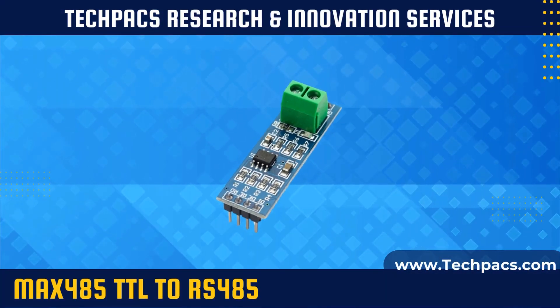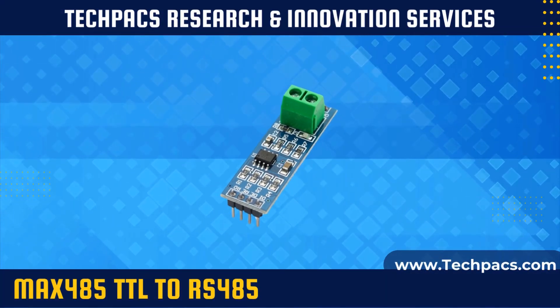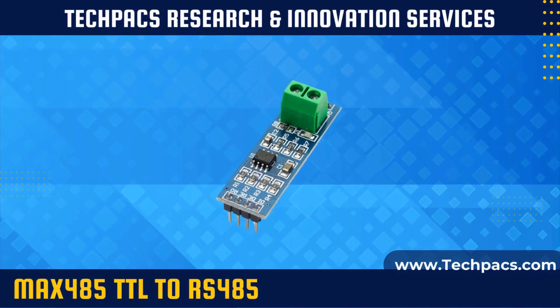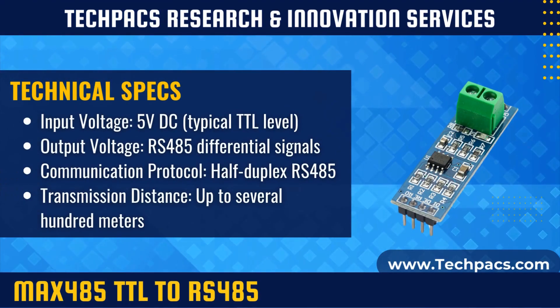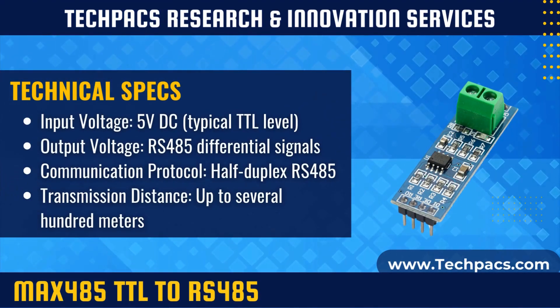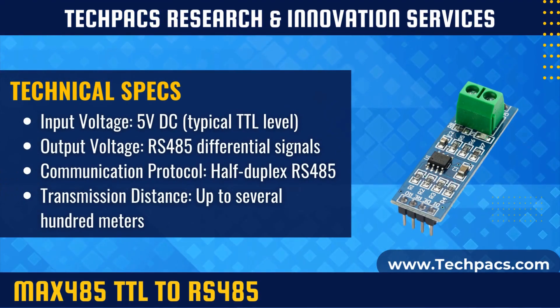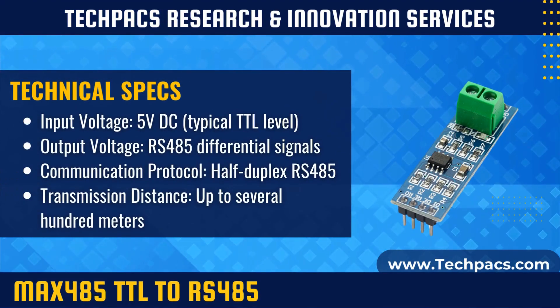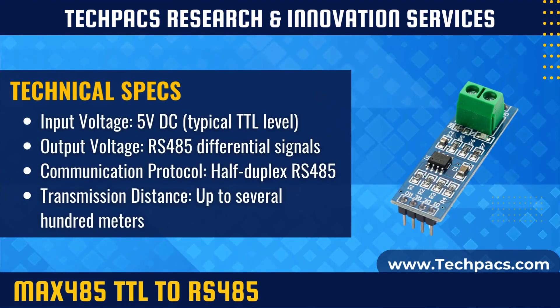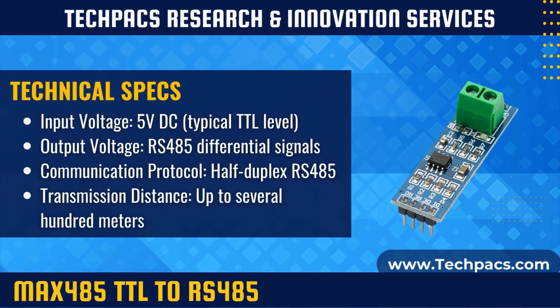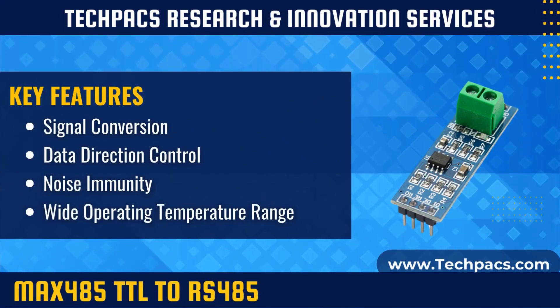The MAX485 TTL to RS485 converter module facilitates seamless communication between TTL (transistor-transistor logic) level signals and RS485 signals. It serves as an interface module, enabling devices with TTL logic levels to communicate over long distances using the RS485 protocol, known for its robustness and noise immunity. The module converts TTL-level signals, typically 0 to 5 volts, from microcontrollers or other TTL-compatible devices to RS485 differential signals, which are suitable for long-distance communication.